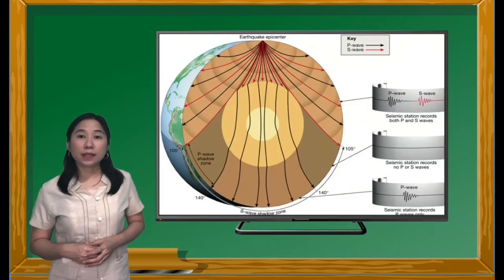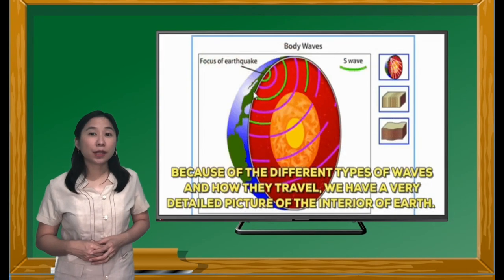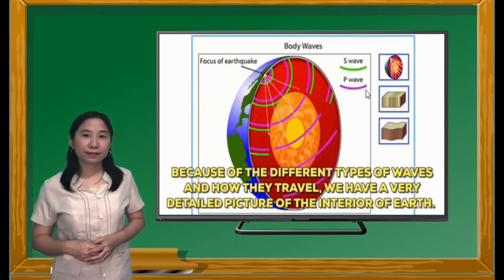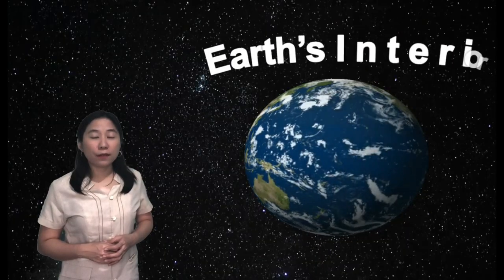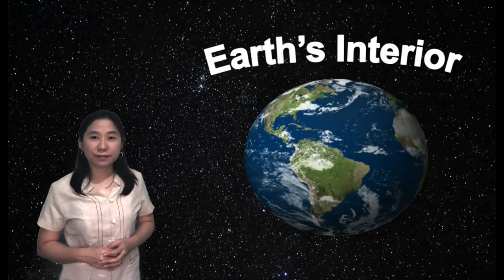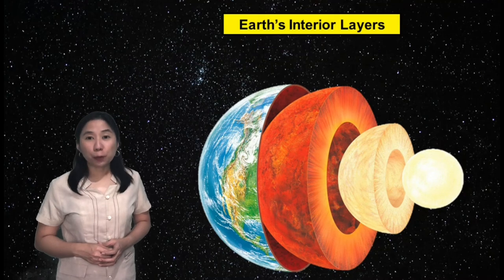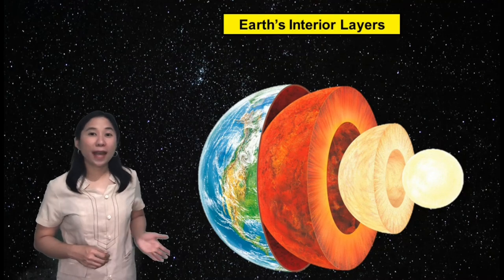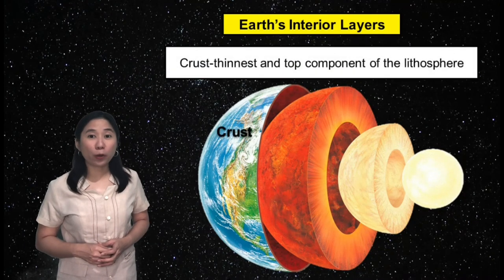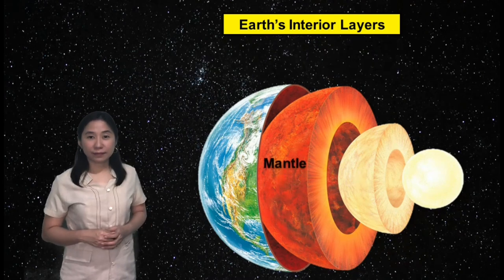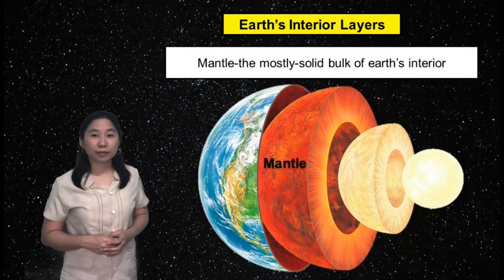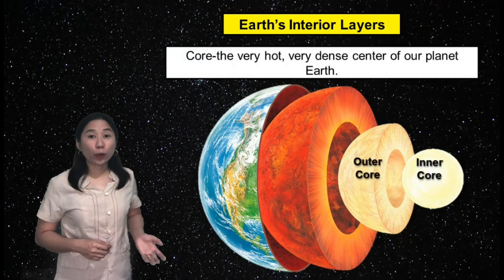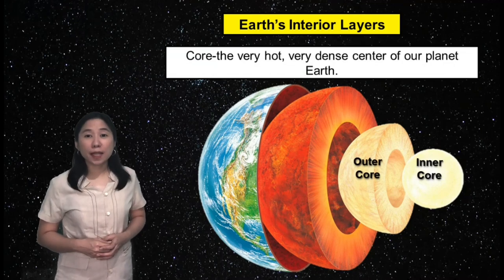With the advances in seismology, it allowed us to learn that the Earth's interior is made of several layers. Starting from the outermost to the innermost layer, we have the crust, which is the thinnest and top component of the lithosphere; the mantle, which is the mostly solid bulk of the Earth's interior; and the core, which is the very hot, very dense center of our planet.